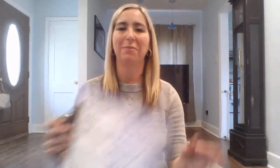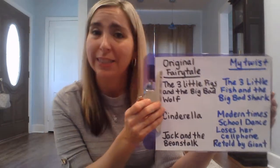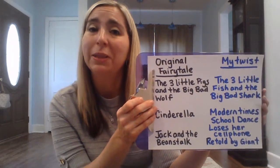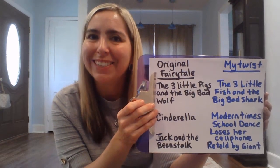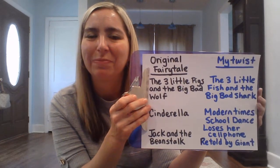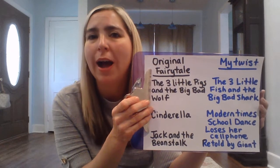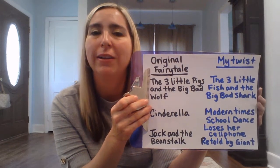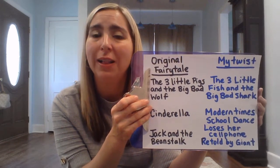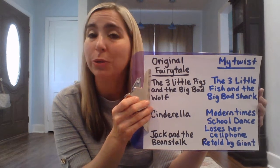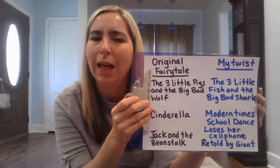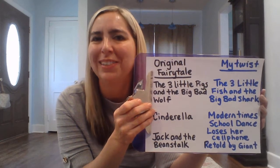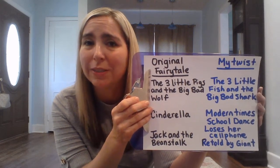Here are some ideas that I came up with myself. Instead of the three little pigs and the big bad wolf, how about the three little fish and the big bad shark? Or I could do a modern twist on Cinderella by saying she's going to a school dance instead of a ball, and she's not going to lose a glass slipper — she's going to lose her cell phone, and that's how the prince finds her.